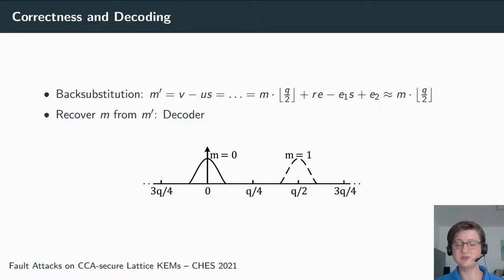You can do this, for instance, by taking each message bit as one coefficient and multiplying this bit with q/2. So you either add zero for a zero bit or q/2 for a one bit. For decryption, you compute m' = v - u·s, and this works because if you do back substitution, you get that this m' is m·q/2—the encoded message—plus r·e - e1·s + e2, an additional error term.